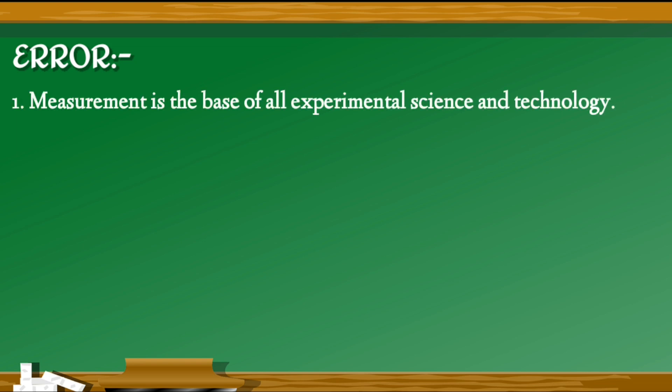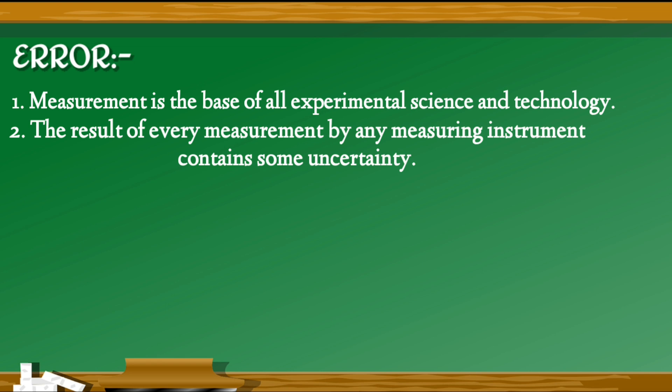Before going to learn about the types of errors, let us learn about error. Measurement is the base of all experimental science and technology. The result of every measurement by any measuring instrument contains some uncertainty. This uncertainty is called error.